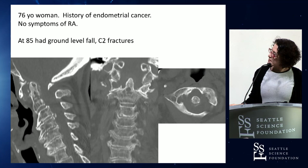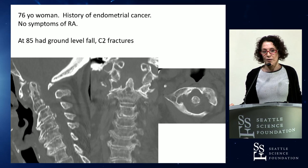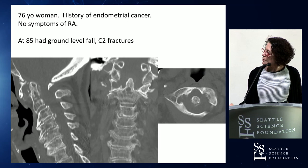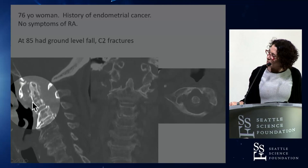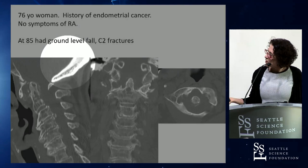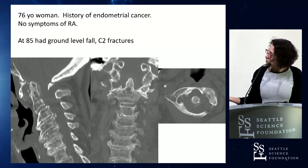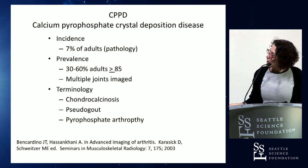This lady has basilar invagination. The next patient is a 76-year-old woman with a history of endometrial cancer, no RA, never had RA. She fell, which is how we got to her. On imaging she has a wide ADI interval and erosions in the ring of C1 - there's just a big hole - plus erosions and subchondral changes in the dens with a very wide AD distance. What she has is CPPD, which is why I say they all look alike.